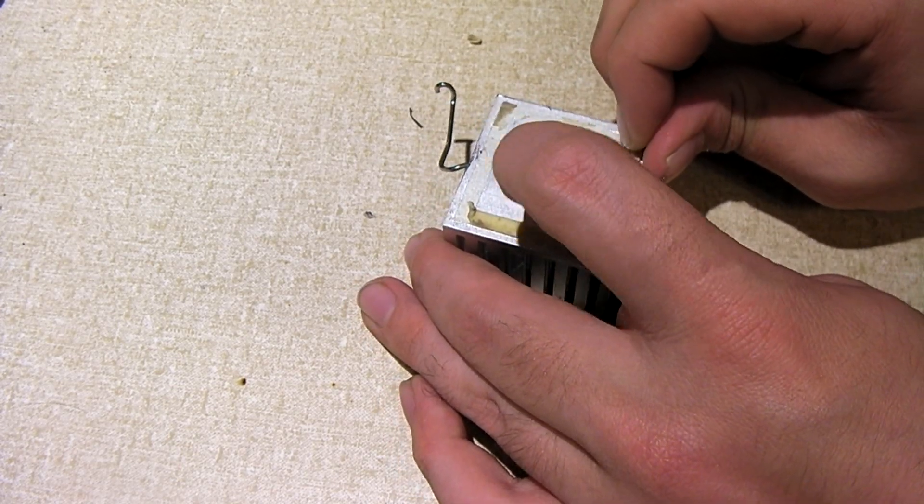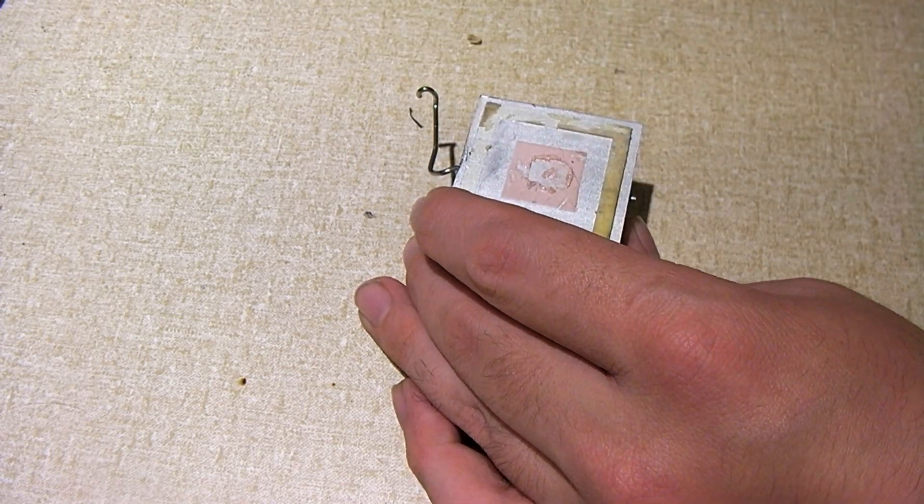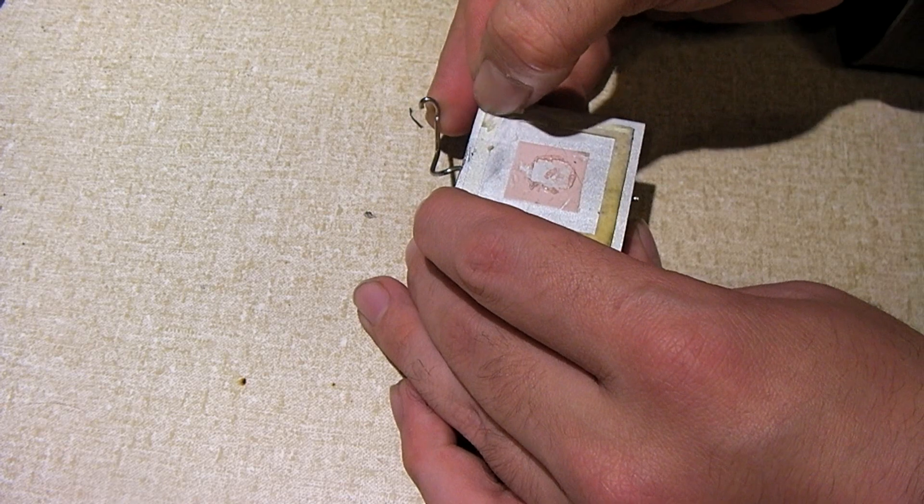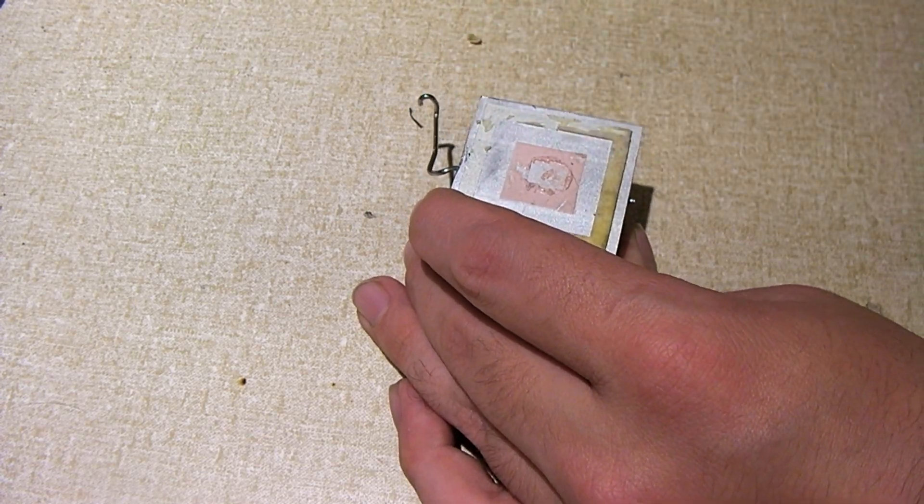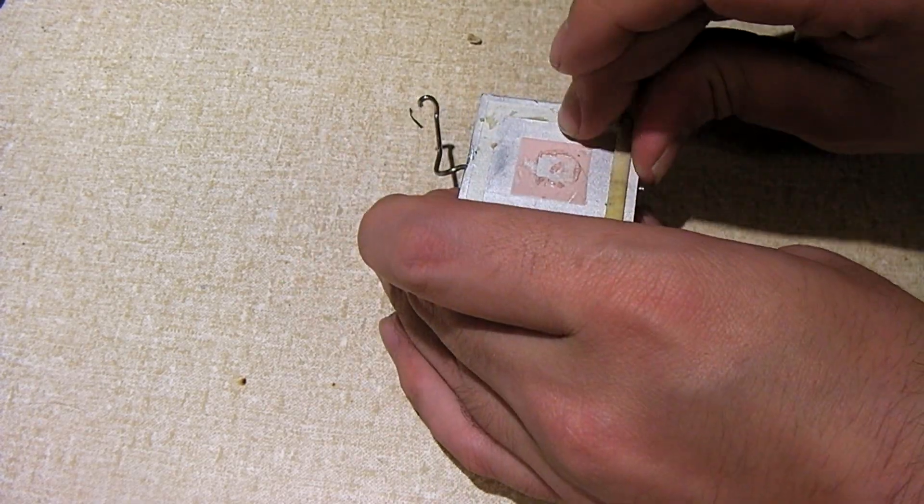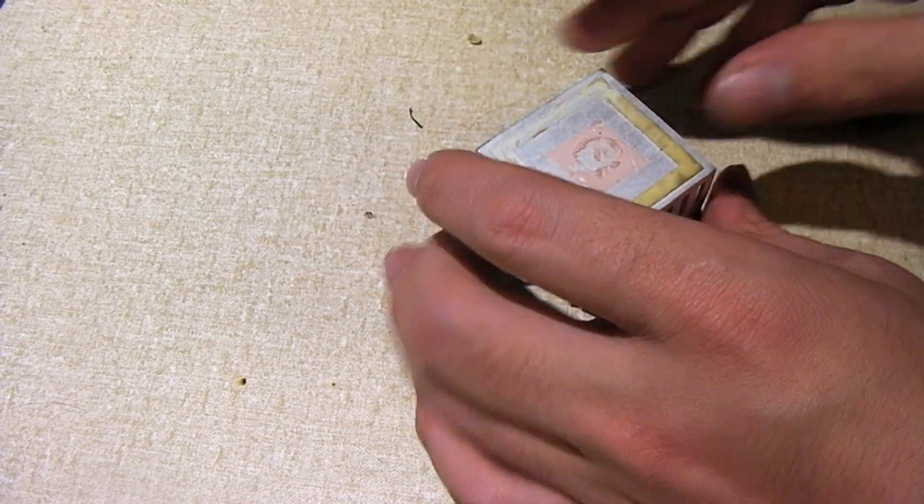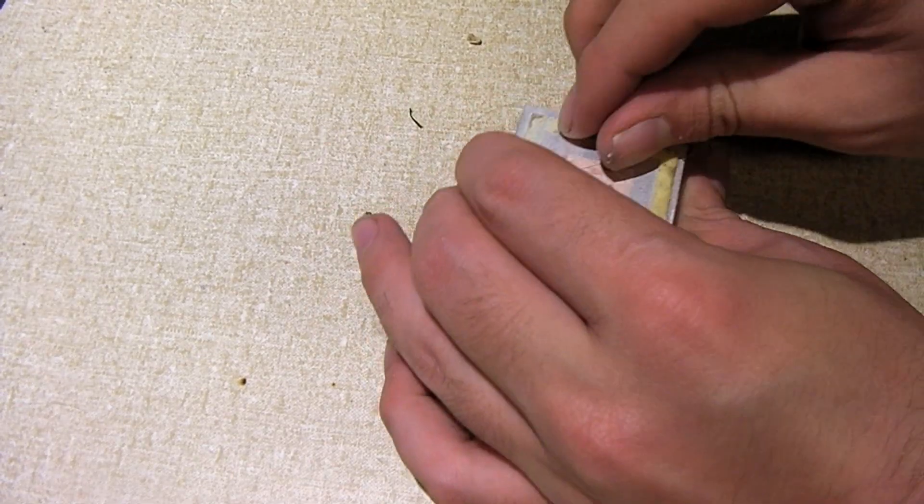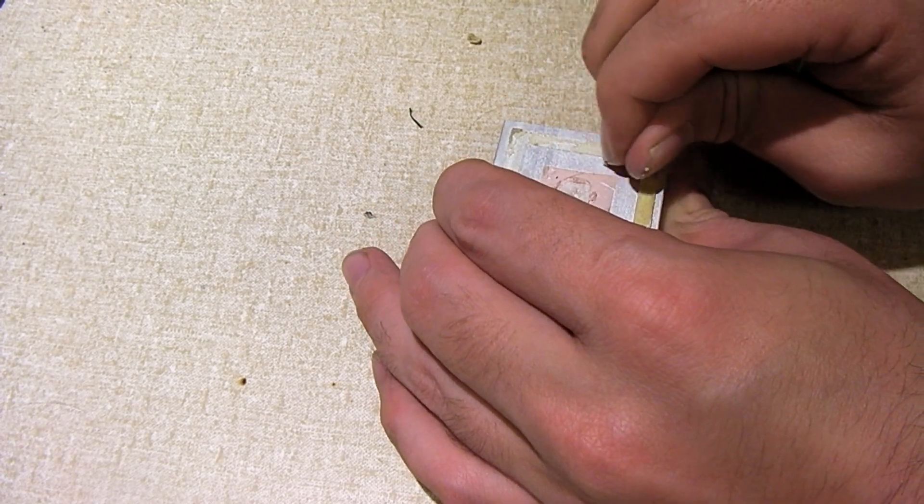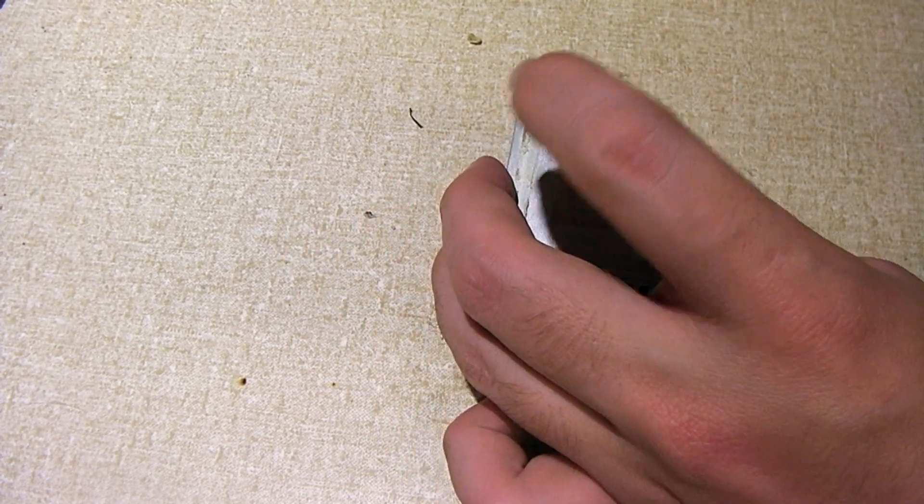This stuff, not only is it hard to get off of the heat sink and also the chip, but it doesn't exactly do the greatest job with conducting heat. So often times you would actually want to get rid of this stuff and replace it with your conventional thermal compound. So I'm still working on getting this off, just scratching it off really. Once it's scratched off of there, it shouldn't be too much of a problem.